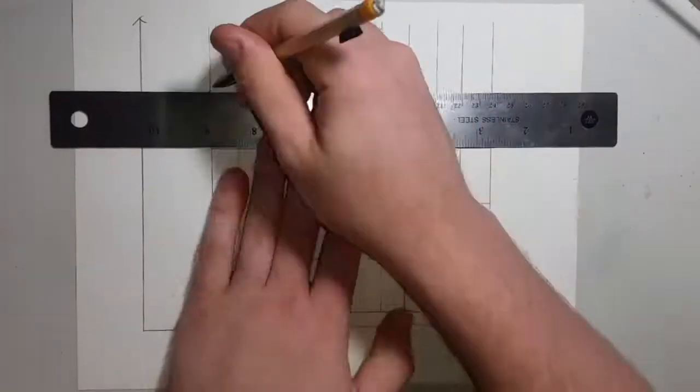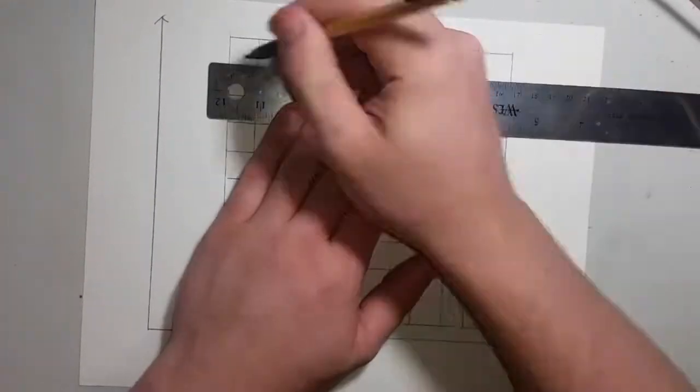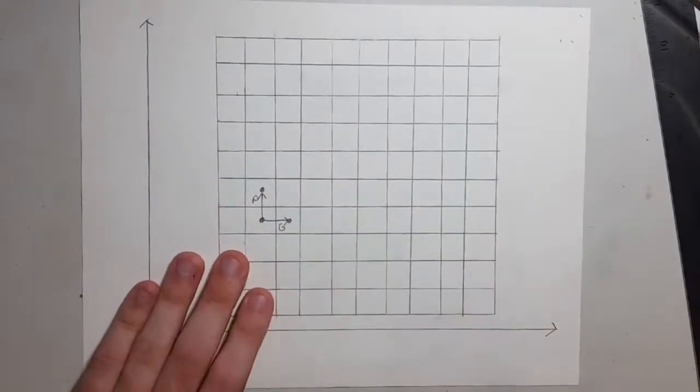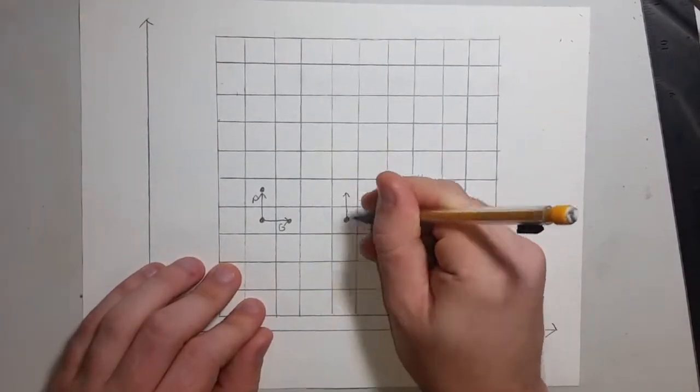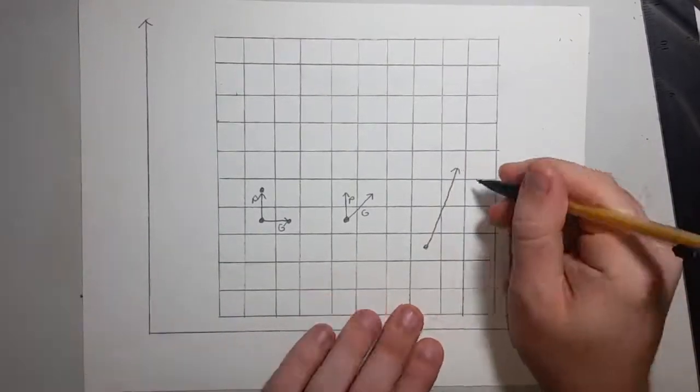The obvious way to visually represent a two-dimensional structure is with a grid. We can then assign one vector, or move, on the grid to represent the generating interval, and another vector to represent the period. As long as the two vectors are co-prime, that is to say, no combination of one vector will arrive at the other vector.